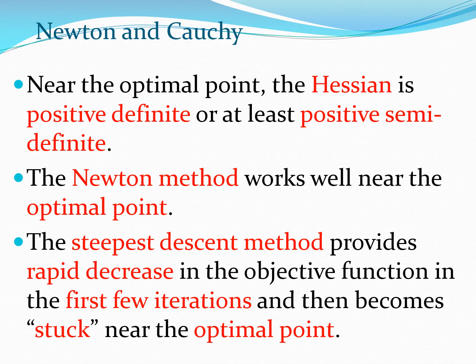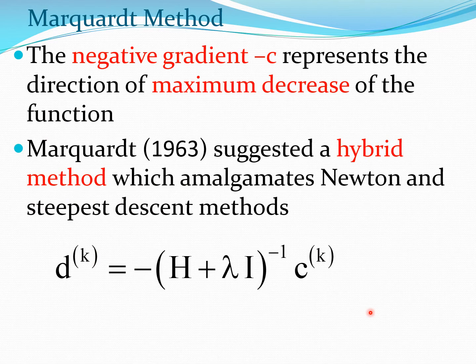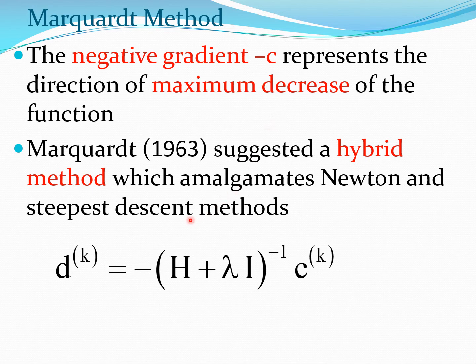So one of the things one could do is to combine or hybridize these methods, and that's what Marquardt did, coming up with this Marquardt modification. Returning back to the steepest descent method, we know that the negative of the gradient, that is minus c, represents the direction of maximum decrease of the function. Essentially, Marquardt created a search direction which combines the search direction of the steepest descent method and the Newton method.